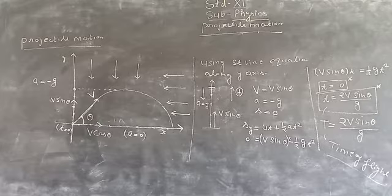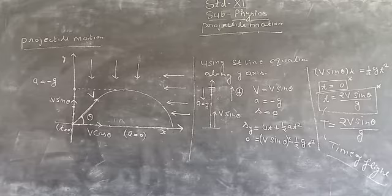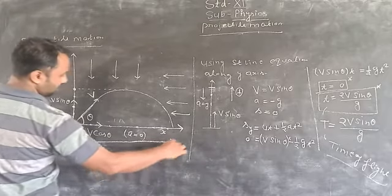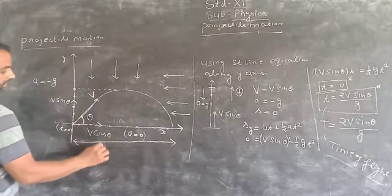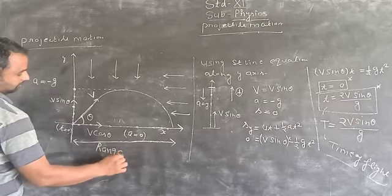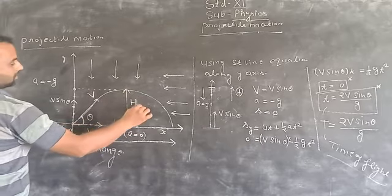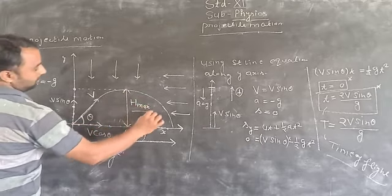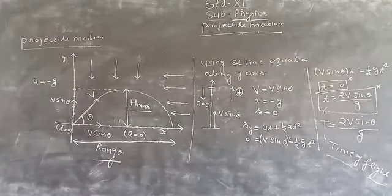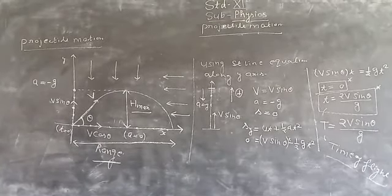Next, we will continue with the maximum height attained by the particle, and the range — the maximum horizontal distance covered by the particle. These are the two remaining key quantities of projectile motion that we need to derive.